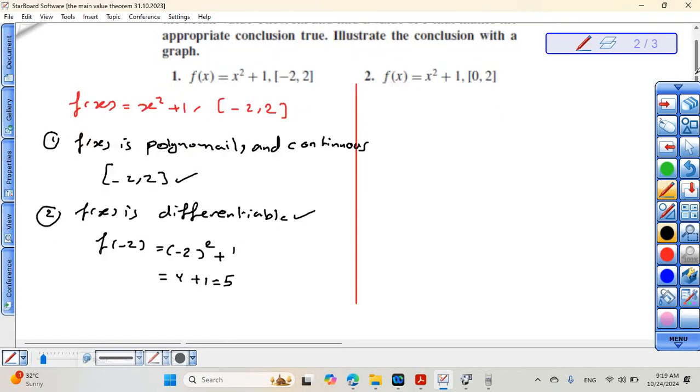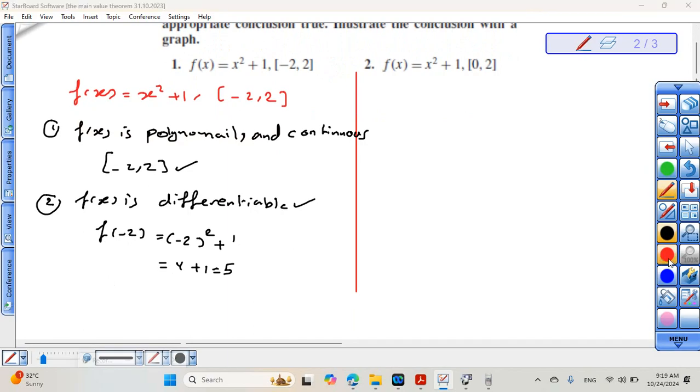F of 2 also equals 2 squared plus 1, which also equals 5. We can write here f of negative 2 equals f of 2. This is satisfied. Move to the last condition.